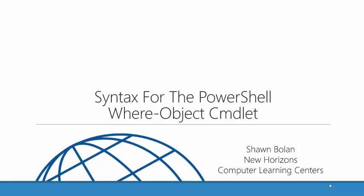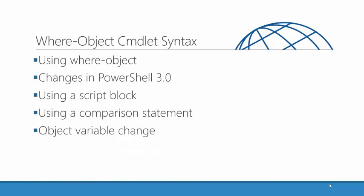I'm going to visit with you today about the syntax for the PowerShell cmdlet Where-Object. We will take a look at the Where-Object cmdlet, what it does and how it can be used. We'll take a look at some changes that happened in PowerShell 3.0, two different syntax variations — using it with a script block versus using it with a comparison statement — and some changes with the way we utilize variables in the Where-Object cmdlet.